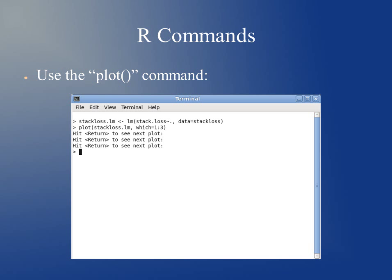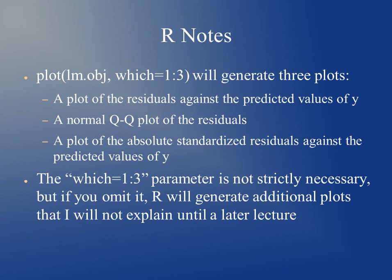Here we have the regression model predicting stack loss based on all of the variables in our data. We use the plot command, inputting our regression model — stack loss dot lm — and the which equals one through three argument tells R which plots we want. The which equals one through three will generate a plot of the residuals against the predicted values of y, a normal QQ plot of the residuals, and a plot of the absolute standardized residuals against the predicted values of y.